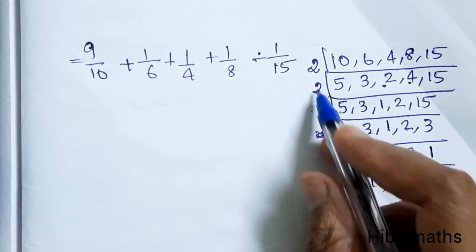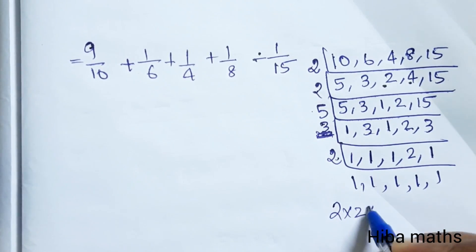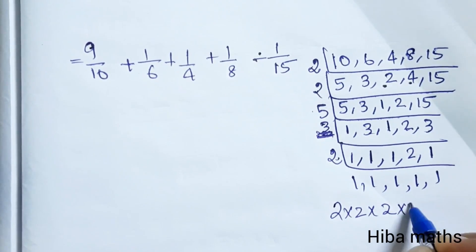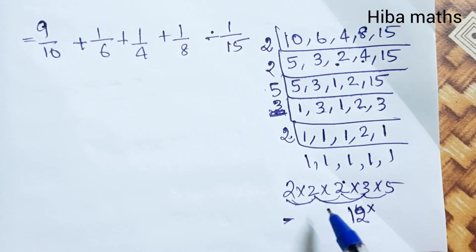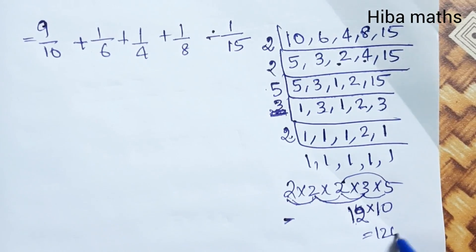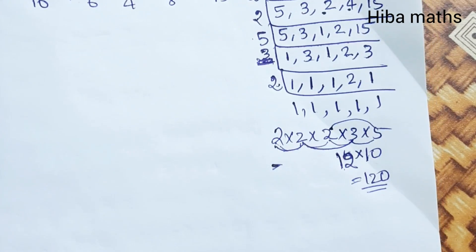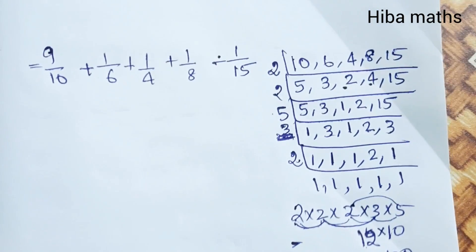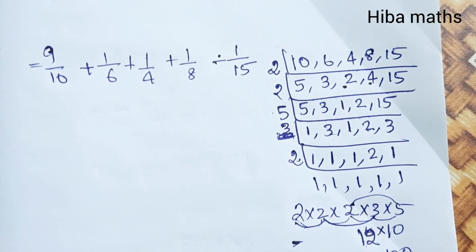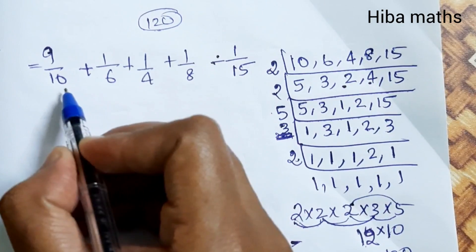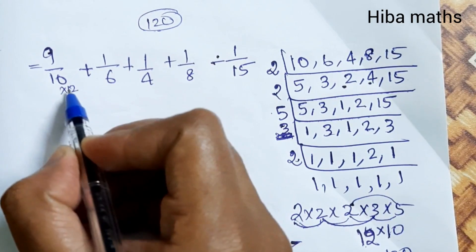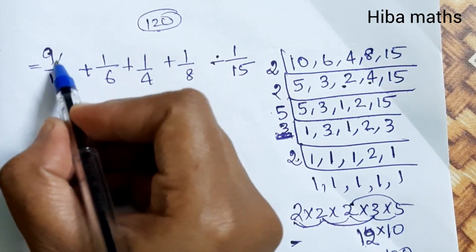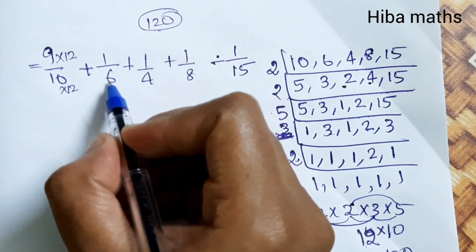We will find the LCM of the denominators: 2 × 2 × 2 × 3 × 5. So 2 twos are 4, 4 threes are 12, 2 fives are 10. The LCM is 120. Now we will convert all fractions to have denominator 120: 10 goes into 120 twelve times, 12 goes into 120 ten times.